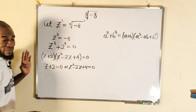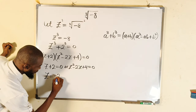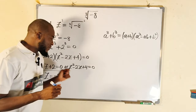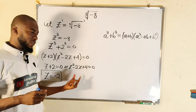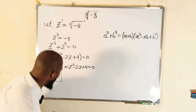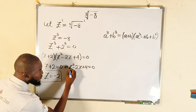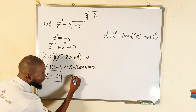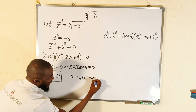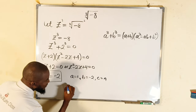From the first factor we confirm that z must be negative two, so z = −2. This is one solution. We can obtain other solutions from the quadratic equation z² − 2z + 4 = 0 using the quadratic formula. The leading coefficient a is 1, b is −2, and c is 4.